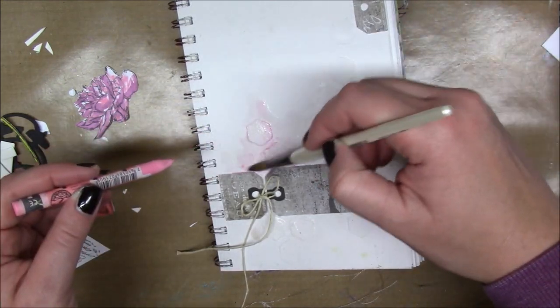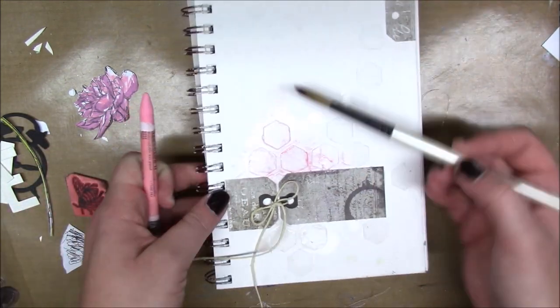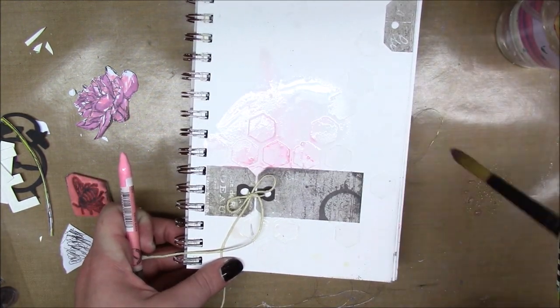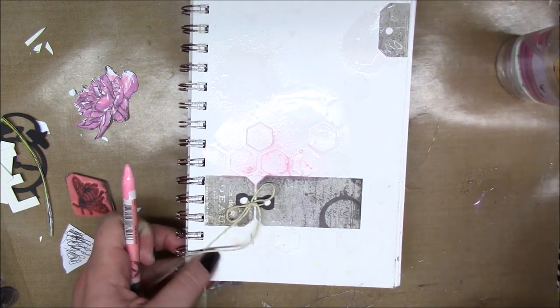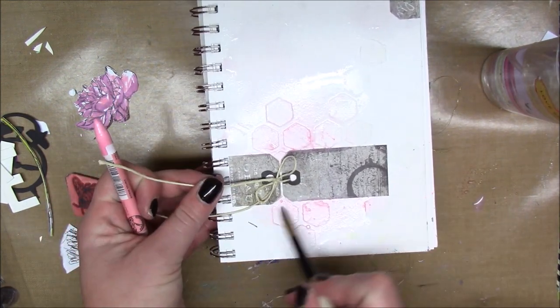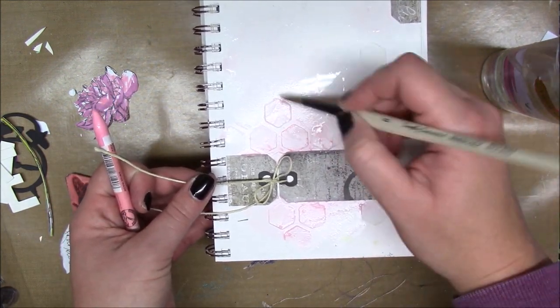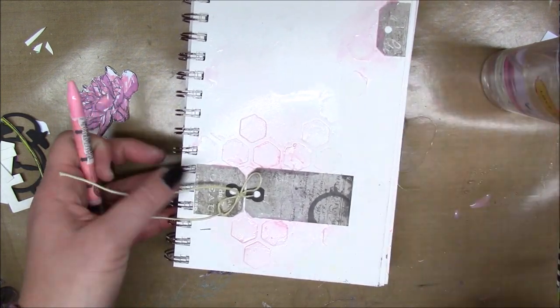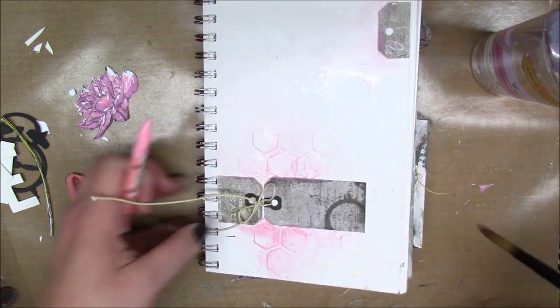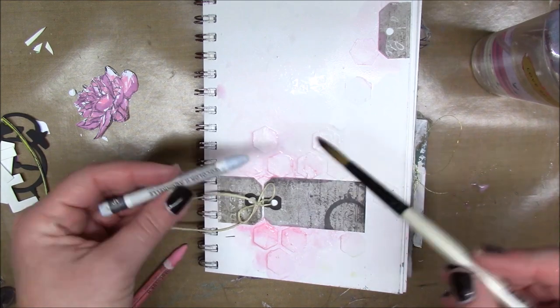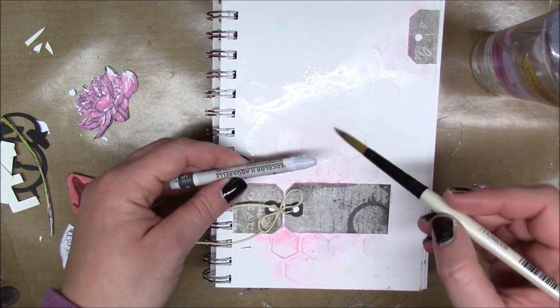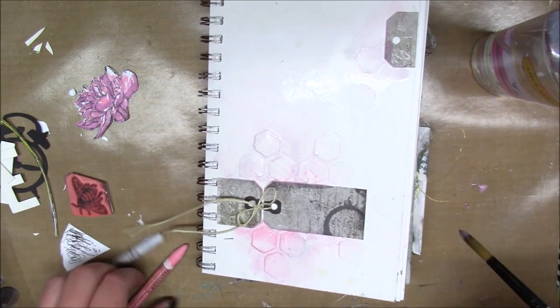I'm taking my Neocolor II in salmon pink and my watercolor paintbrush and just scribbling a little color around, trying to concentrate the color around my tag. I'm spraying some water to kind of feather it out and make it look really blended into the background. Then I'm also going to add some gray from a Neocolor II crayon. I'm just going back and forth with the colors until I'm happy with the saturation and the blend.